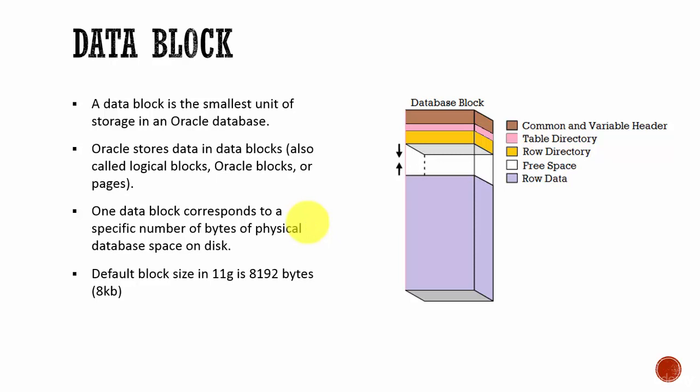Whenever we are talking about Oracle database and we are saying Oracle reads data and writes data, that means Oracle database is writing data blocks and reading data blocks. Remember that. That is the smallest logical unit by which the Oracle database understands.